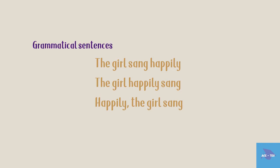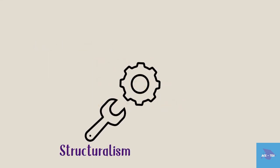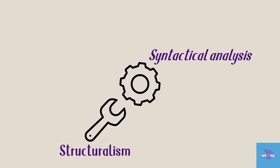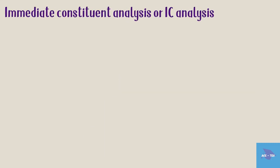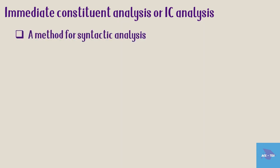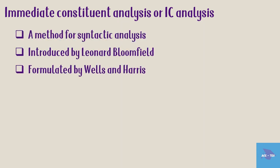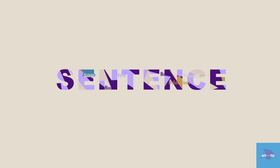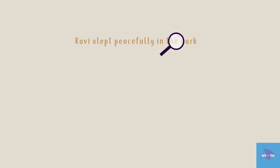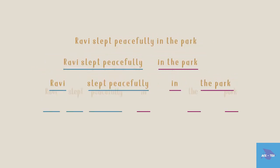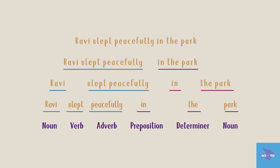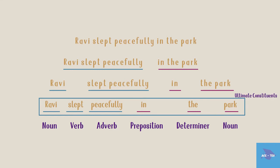Let's look at an important tool used by the structuralists for syntactic analysis. Immediate constituent analysis, or IC analysis, was a method for syntactic analysis introduced by Leonard Bloomfield and formulated by Wells and Harris. In this analysis, a sentence is broken down into its immediate constituents. This analysis aims at analyzing each utterance into the smallest meaningful units possible. An utterance is cut into two natural divisions, and this process of binary segmentation continues until we reach the smallest meaningful units.